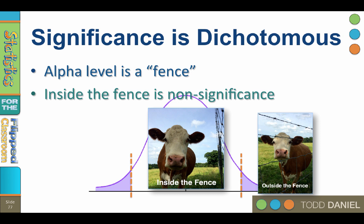If your P equals 0.06, you are still inside the fence and still non-significant. Only when P is less than 0.05 is the test significant. Significance is dichotomous. All or nothing.